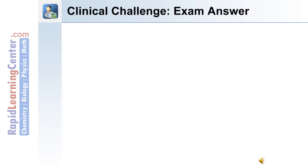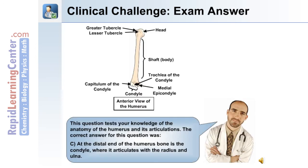Here's the answer to the question. C: At the distal end of the humerus is the condyle where it articulates with the radius and ulna.